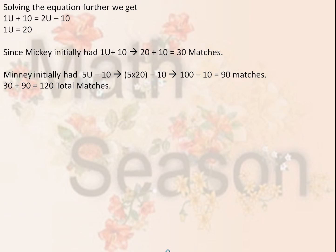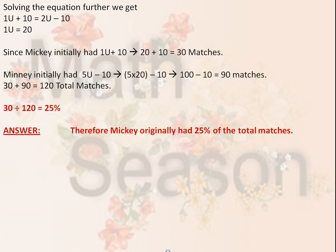30 plus 90 equals 120 total matches. 30 divided by 120 equals 25%. Therefore, Mickey originally had 25% of the total matches.